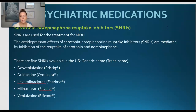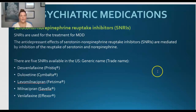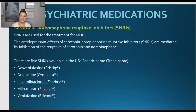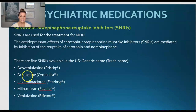Next, we're going to talk about the serotonin-norepinephrine reuptake inhibitors, or SNRIs. These medications are used to treat major depressive disorder, or MDD. The antidepressant effects of the SNRIs are mediated by the inhibition of the reuptake of serotonin and norepinephrine. The five main SNRIs available in the U.S. include desvenlafaxine or Pristiq, duloxetine or Cymbalta, Fetzima, Savella, and venlafaxine or Effexor.